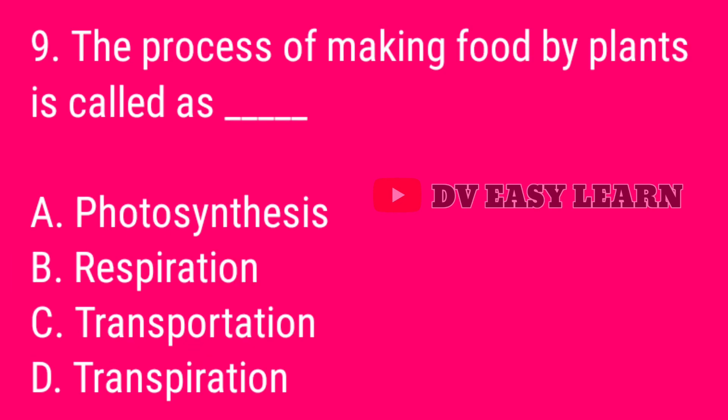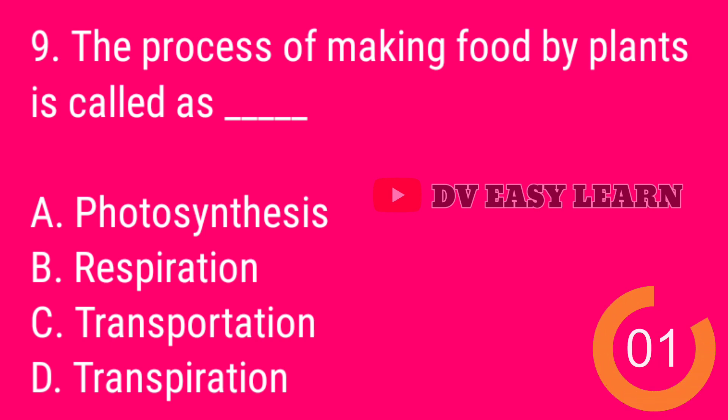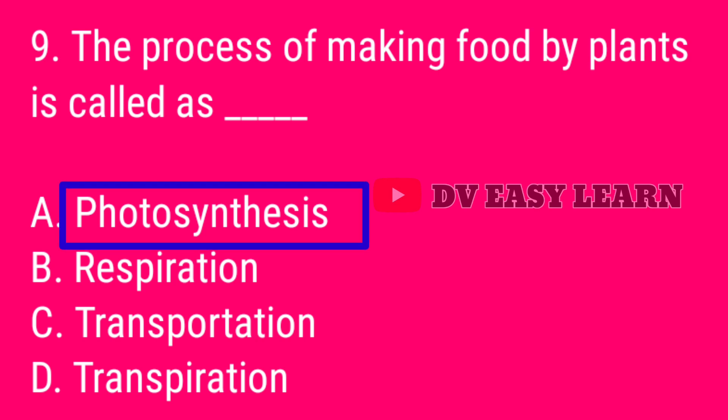Question number 9. The process of making food by plants is called as? Correct answer: Photosynthesis.